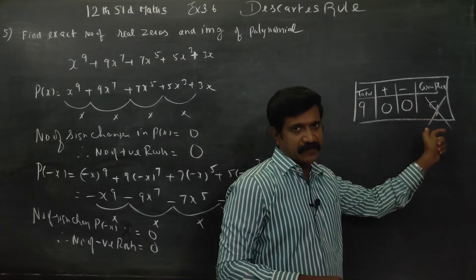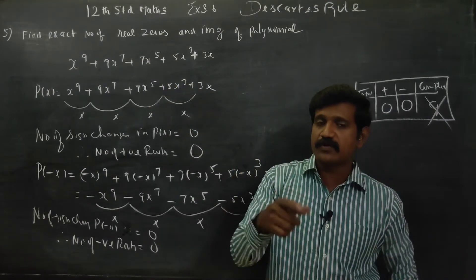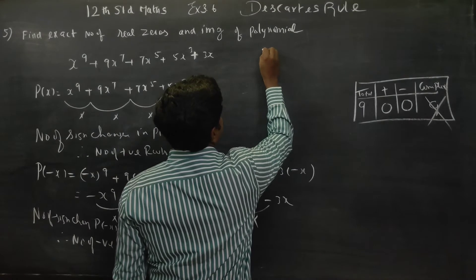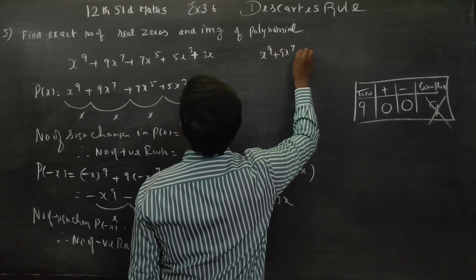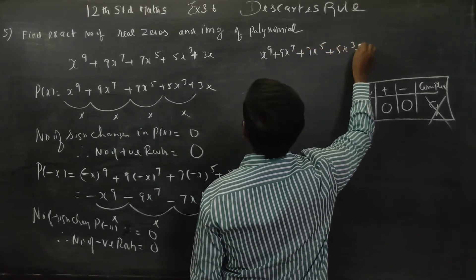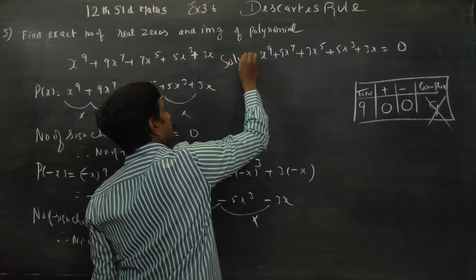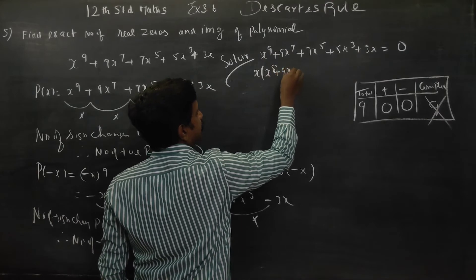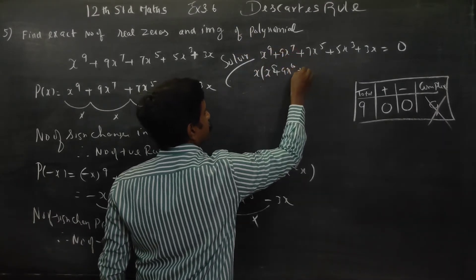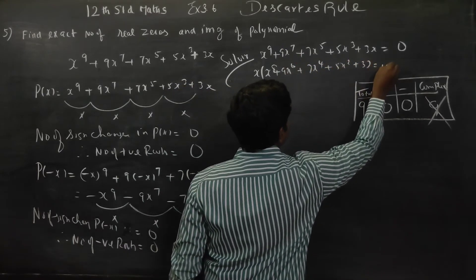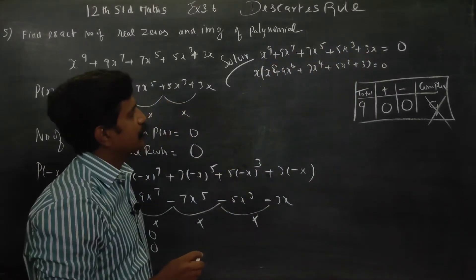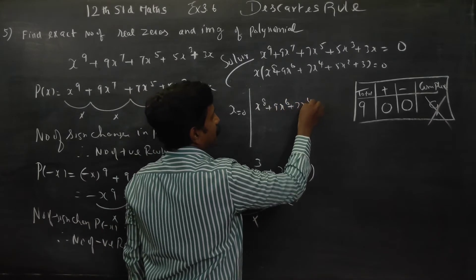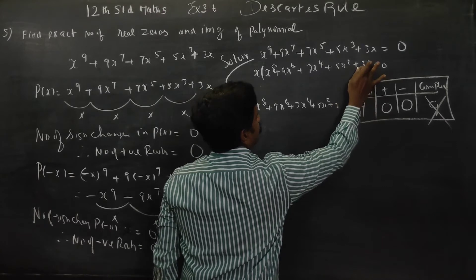So let us solve p(x) = 0: x⁹ + 9x⁷ + 7x⁵ + 5x³ + 3x = 0. Taking x as common: x(x⁸ + 9x⁶ + 7x⁴ + 5x² + 3) = 0. Therefore, x = 0 or x⁸ + 9x⁶ + 7x⁴ + 5x² + 3 = 0.